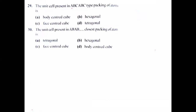The unit cell present in ABC-ABC type packing of atoms is face-centered cube, or you can say CCP - cubical closed packing. The unit cell present in AB-AB closed packing of atoms is hexagonal closed packing - a hexagon is formed.